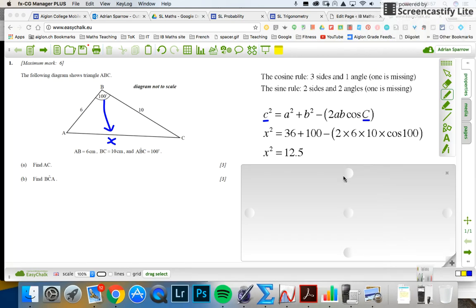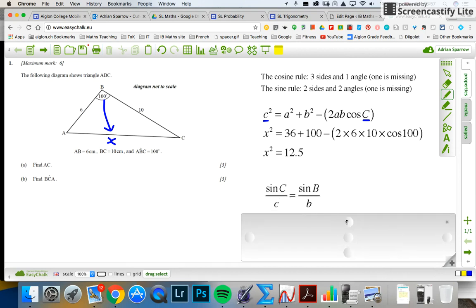Now part B, I need to sine rule, because part B, I'm trying to find BCA, BCA. So I'm trying to find this angle here. So I've got one angle, two angles, and two sides. Actually, I've got three sides, but I haven't got this angle. So what I'm going to do here is this angle that I want to know, that's C, and it's opposite six. So sin C is opposite six.